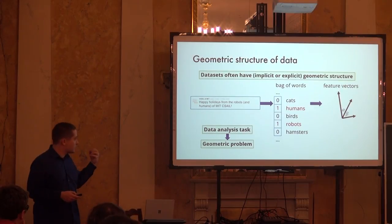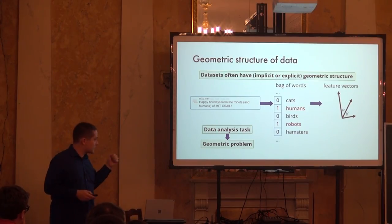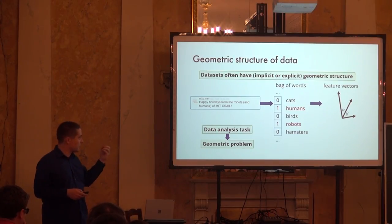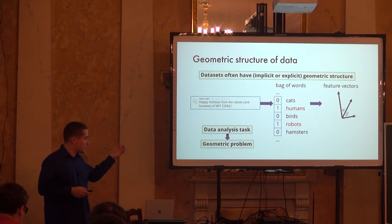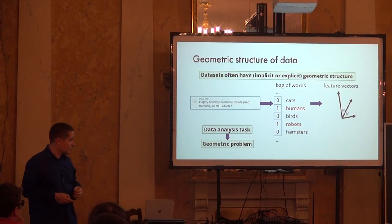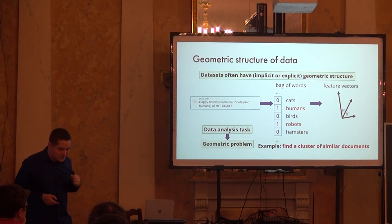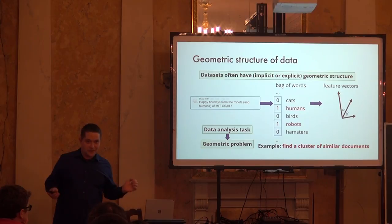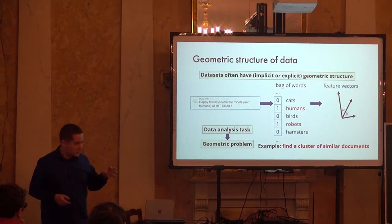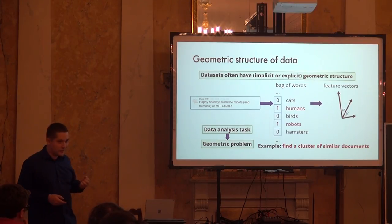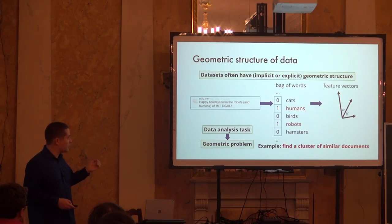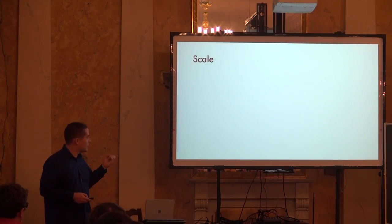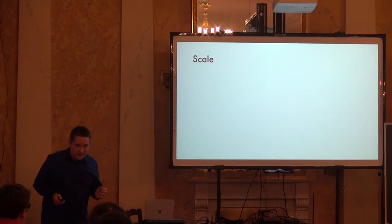Overall, the idea is you start with some data analysis task and through some transformation — like bag of words — you arrive at a geometric problem you hope to solve. A good example is finding a cluster of similar text documents, which in feature space becomes: find a bunch of vectors that are close to each other — a purely geometric problem. There are a couple of challenges here, both having to do with scale.